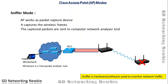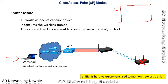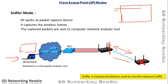Sniffer mode uses the access point as a hardware or software sniffer to monitor network traffic. The AP captures wireless frames and sends them to a computer network analyzer tool such as Wireshark — a free packet analyzer that displays detailed information about packets, including source address, destination address, and the type of traffic flowing through the network.